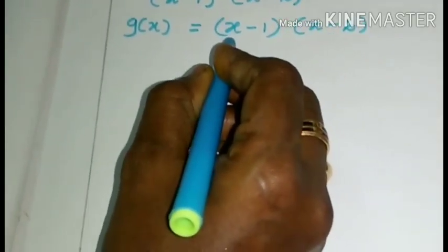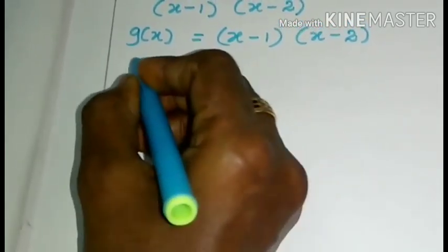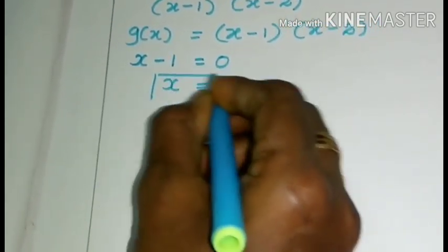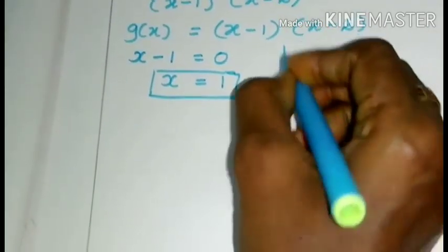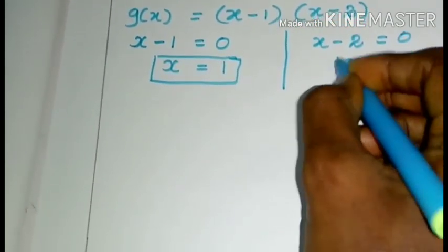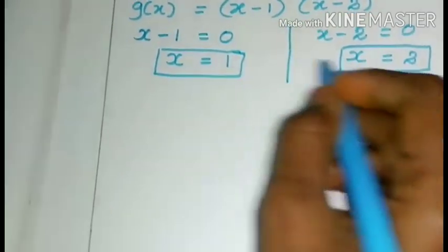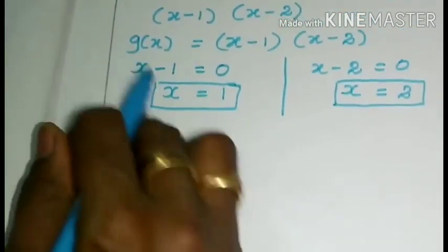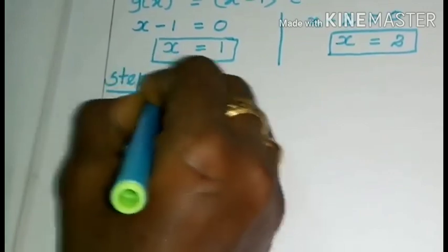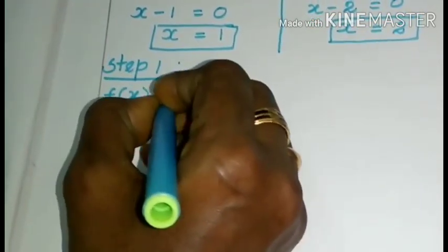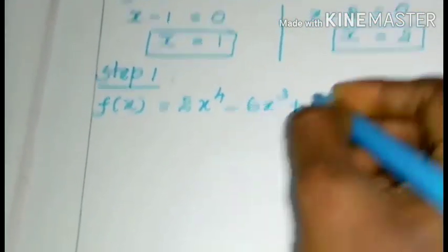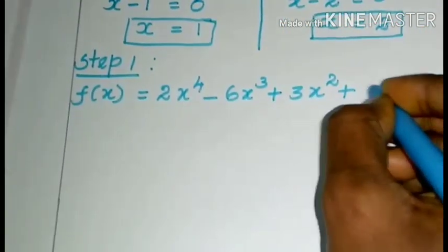We find the zeros of the divisor. From x − 1 = 0, x = 1. From x − 2 = 0, x = 2. So x = 1 and x = 2 are the zeros of the divisor g(x). Now we move to Step 1. In Step 1 we take f(x) = 2x⁴ − 6x³ + 3x² + 3x − 2 and substitute x = 1.